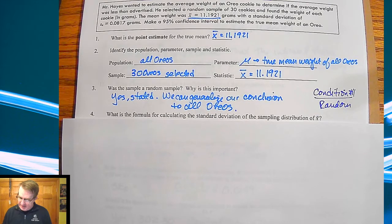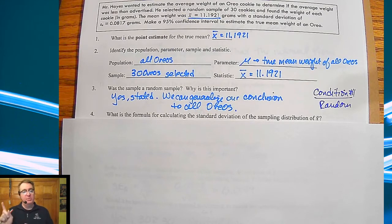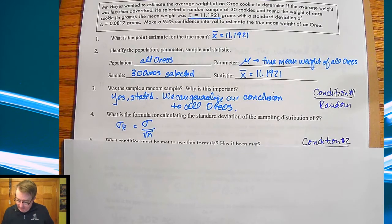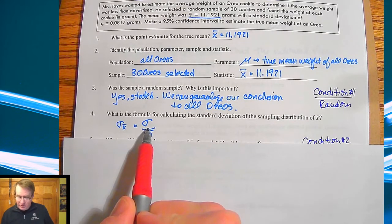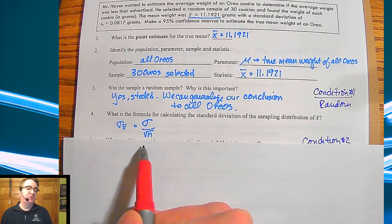Now remember we're doing this from means not proportions. A lot of times students will come back and they'll start doing the square root of p minus one minus p all over n. Perfectly understandable given what we've been doing but we're shifting gears here and again it's important to realize are we doing proportions are we doing means. So here it is going to equal the standard deviation of the population divided by the square root of n.